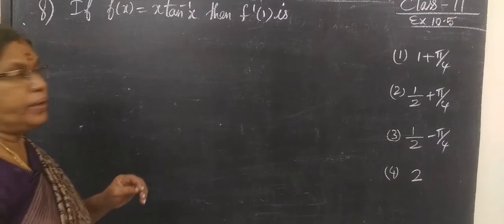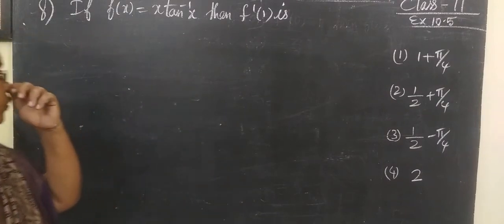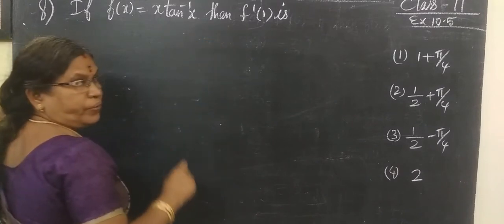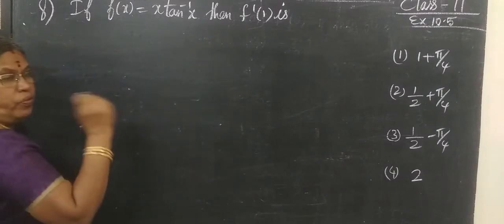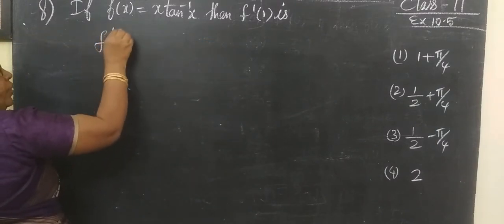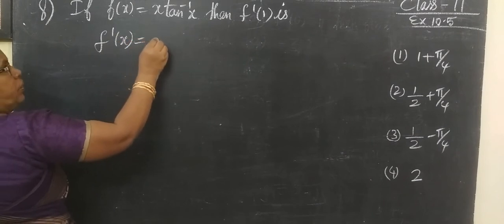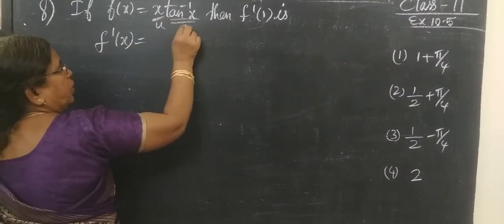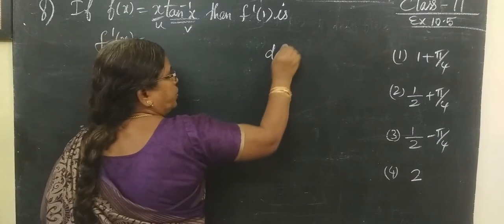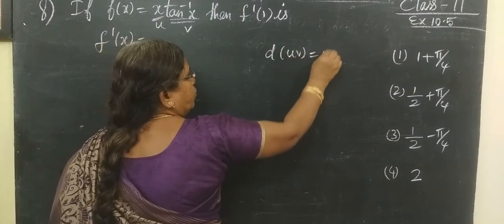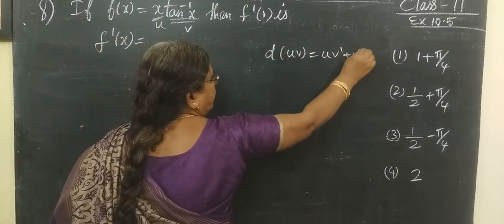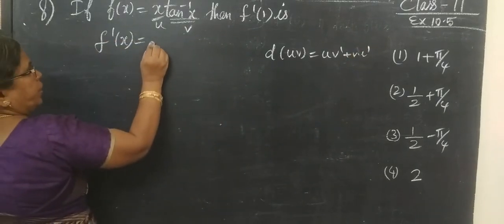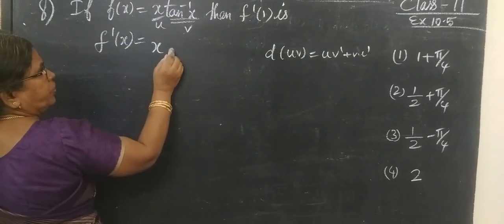Now question number 8. First, to find f'(x). This is the UV method — this is u and this is v. What is d of uv?